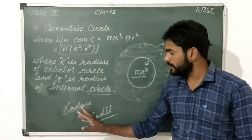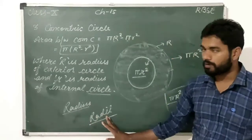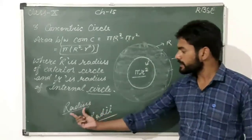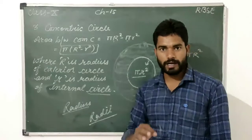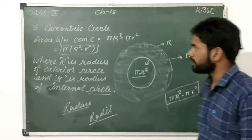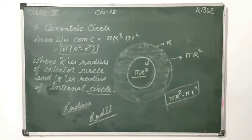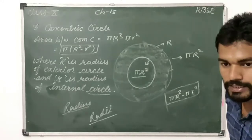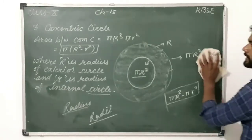Note that 'radius' is the singular form and 'radii' is the plural form. Please note this down, and now let's proceed to exercise 15.1.